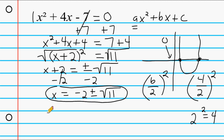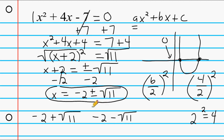Sometimes people write both answers separately: one answer is −2 + √11 and the other is −2 − √11. Because we had ±√11, we have two possible answers. This equation creates a parabola that intersects the x-axis in two spots. Because the a value is positive, the parabola opens upward and intersects the x-axis at those two locations.